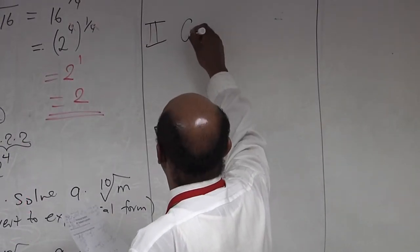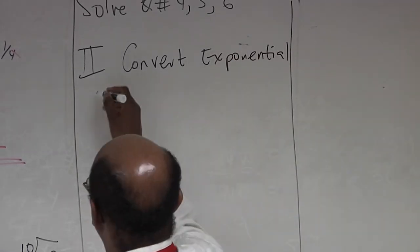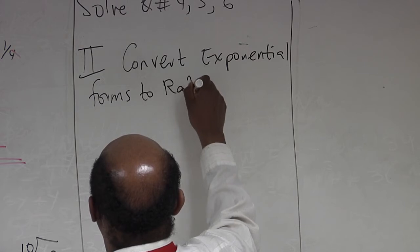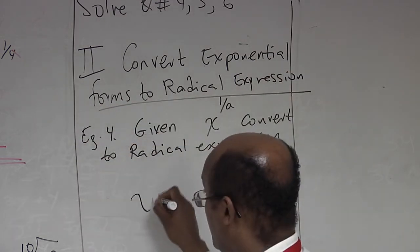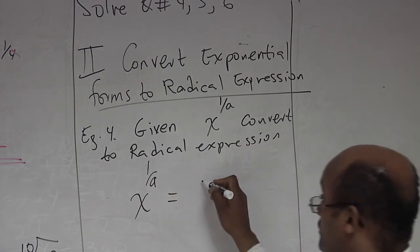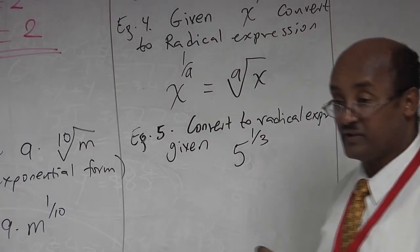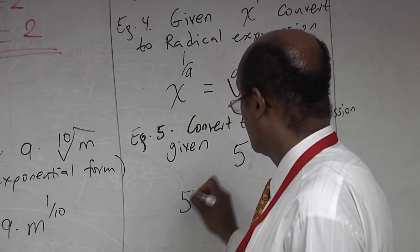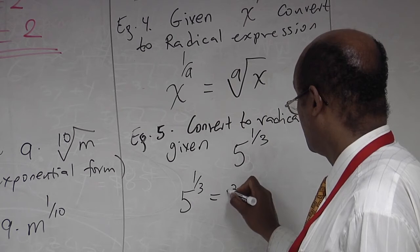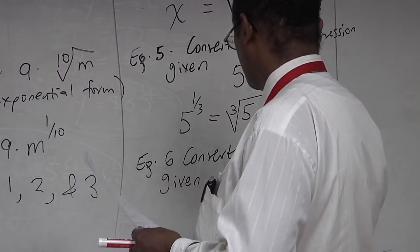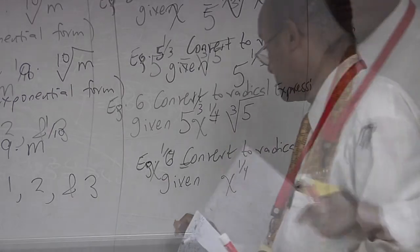The second topic is converting from exponential form to radical expression. So x to the power of 1 over a is the same as the ath root of x. For example, 5 to the power of 1 over 3 is the same as the third root of 5.